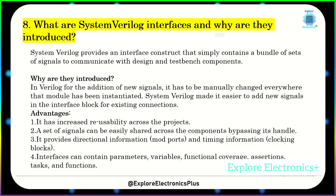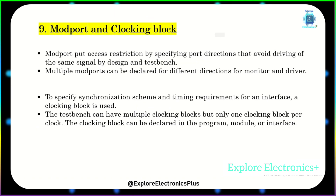An interface can contain parameters, variables, functional coverage, assertions, tasks, and functions. Modports and clocking blocks are components of an interface. Modports put access restrictions by specifying port directions, avoiding the same signal being driven by both design and testbench. Multiple modports can be declared for different directions, such as monitor and driver. A clocking block is used to specify synchronization scheme and timing requirements. The testbench can have multiple clocking blocks, but only one clocking block per clock. The clocking block can be declared in the program, module, or interface.